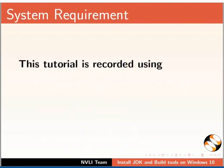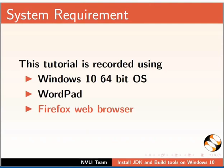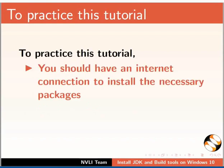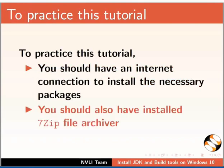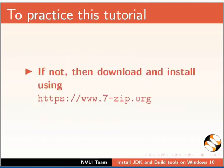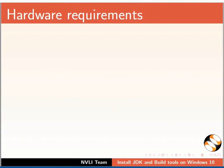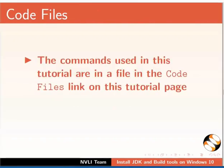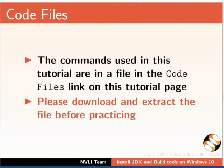This tutorial is recorded using Windows 10 64-bit OS, WordPad, and Firefox Web Browser. However, you may use any other editor or web browser of your choice. To practice this tutorial, you should have an internet connection to install the necessary packages. You should also have installed 7-zip file archiver. If not, then download and install it using this URL. The minimum hardware requirements for DSpace installation are: I3 processor or above, 100 GB hard disk or more, and 4 GB RAM or above.